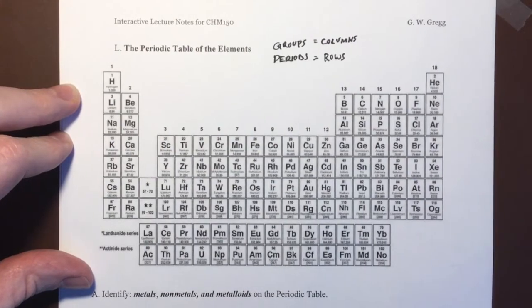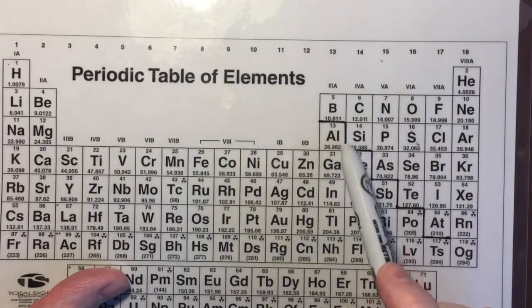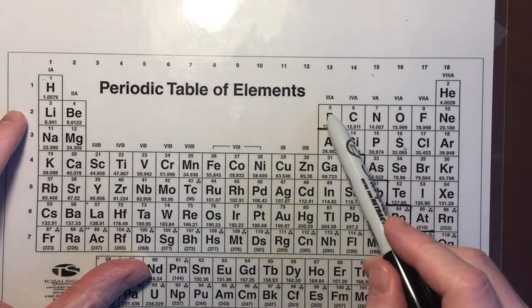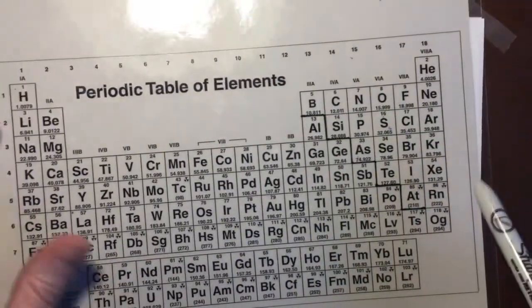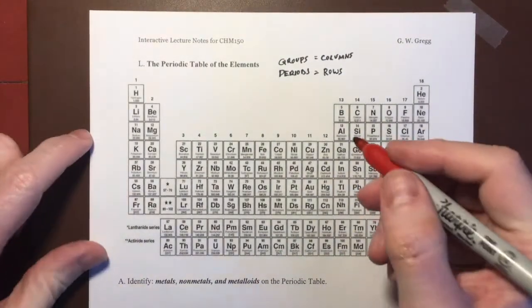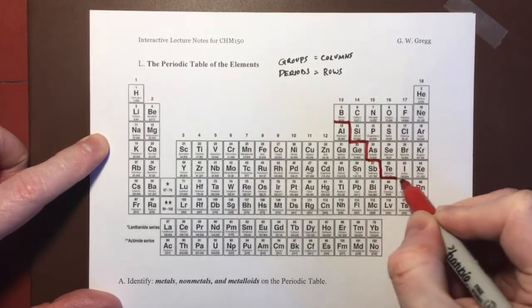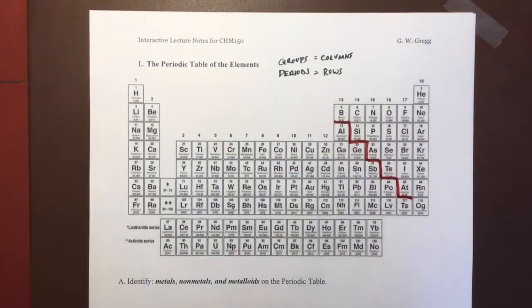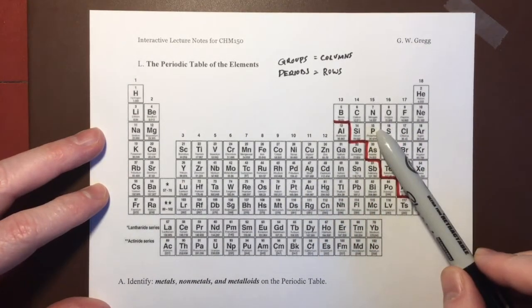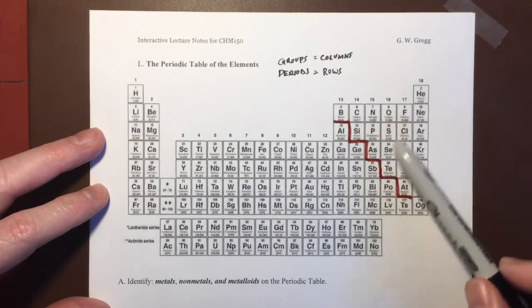Now on your periodic table that you're given in class, it already has a little stair step here and I'm going to go ahead and draw that in. Notice that it starts under boron and it goes down to stop under astatine. That's an important little dividing line. Generally we categorize the types of elements as metals if they are to the left of that stair step or non-metals if they are to the right of that stair step.